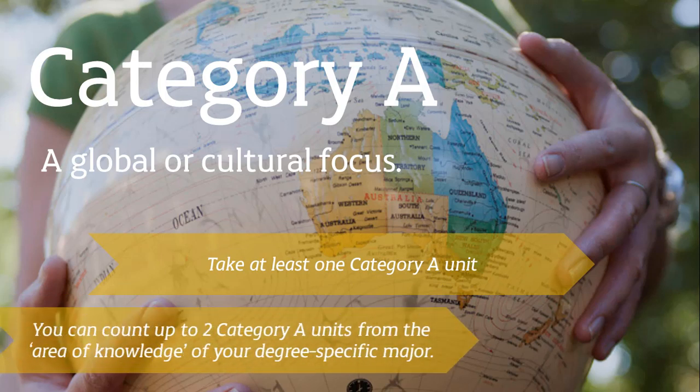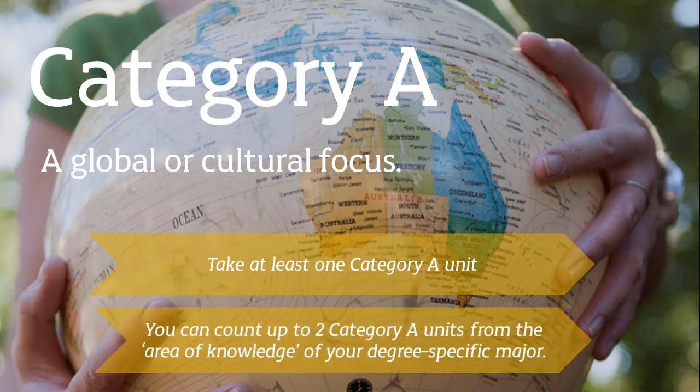You can count up to two Category A units from the area of knowledge of your degree-specific major. Majors are grouped according to the discipline area in which they are taught — this is known as the area of knowledge. Category A units also include languages other than English units, Indigenous Studies units, approved mathematics and statistics units, and units taken on an approved study abroad or exchange program.